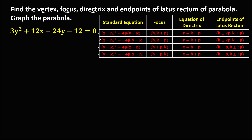First, from this given equation, since the variable with exponent 2 has a numerical coefficient, we need to reduce this equation first by dividing every term by that number. So, divide every term by 3. This gives us y squared, then plus 12 divided by 3 is 4x, plus 24 divided by 3 is 8y, then minus 4 equals 0.